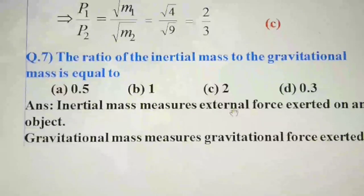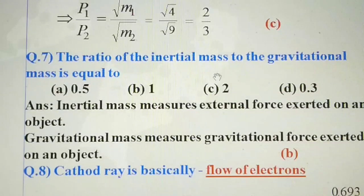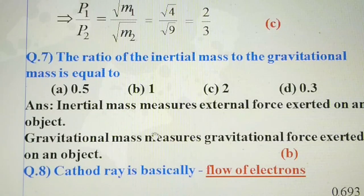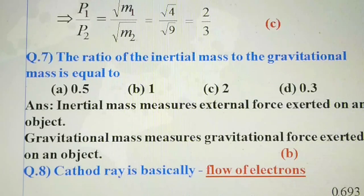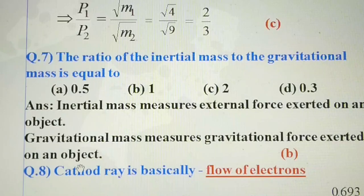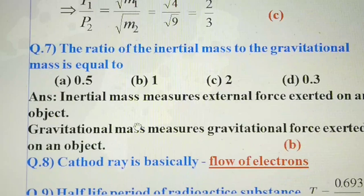Next question: the ratio of inertial mass to the gravitational mass is equal to? First we need to know — inertial mass is the mass measured when an external force acts on the body. Gravitational mass relates to gravitational force. Since both masses are the same, the ratio is 1 to 1. So the answer is B.